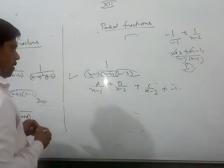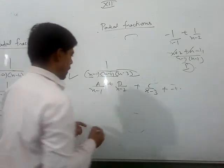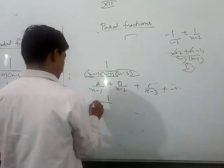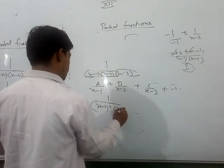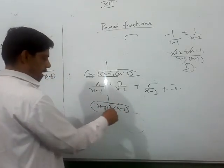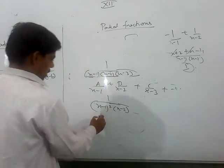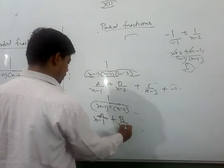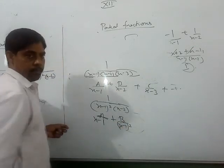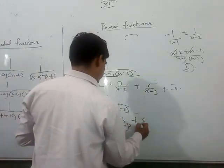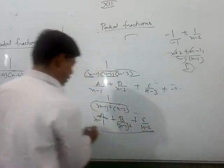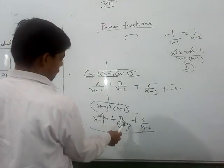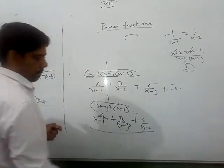Then no problem. Now there could be another possibility that the factor is repeated. So this will be A upon x-1 plus B upon (x-1) squared plus C upon x-2.